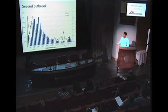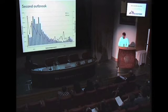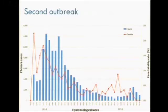A second outbreak then occurred, mainly located in Port-au-Prince, Carrefour, and Delmas in May 2011. It was linked with the rainy season. This was an opportunity to explore GIS mapping in real time to follow the cholera outbreak.